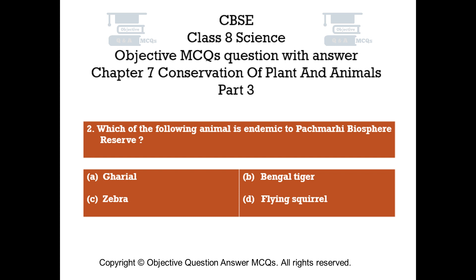Question number 2. Which of the following animals is endemic to Pachmarhi Biosphere Reserve? Option A - Gorilla. Option B - Bengal Tiger. Option C - Zebra. Option D - Flying Squirrel.